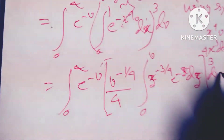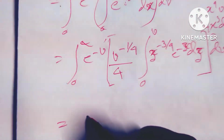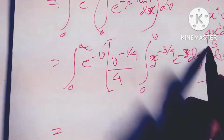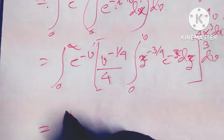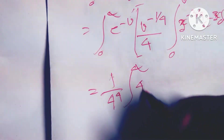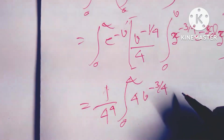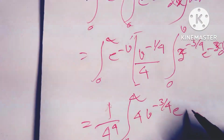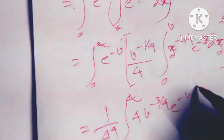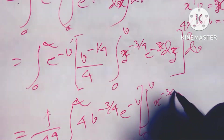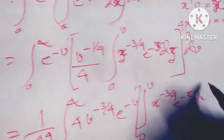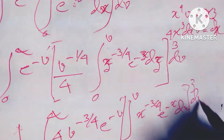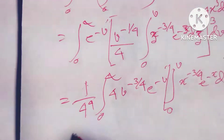The factor coming in here is 4 cubed, so it is 1 over 4 to the power 4. I can write: 1 over 4 to the power 4, times integral from 0 to infinity of 4 times v to the power minus 3 by 4, e to the power minus x dx — whole cube — times dv. This is a very simple calculation.